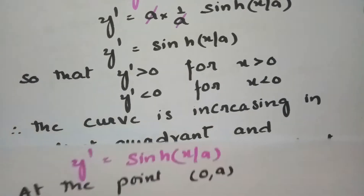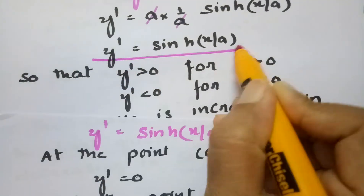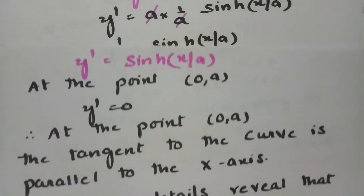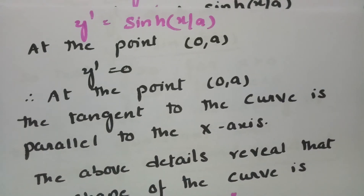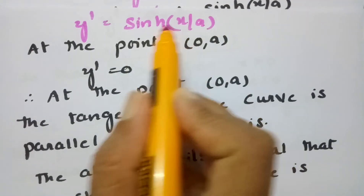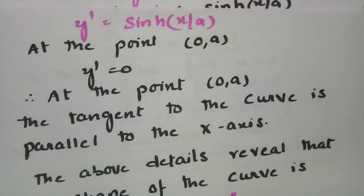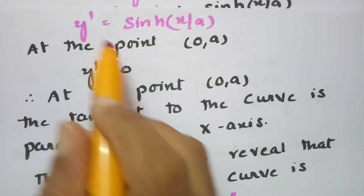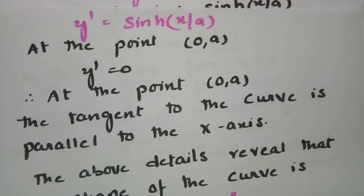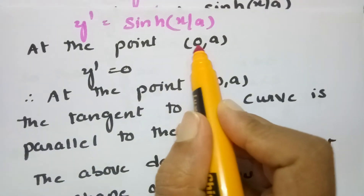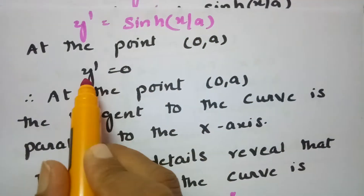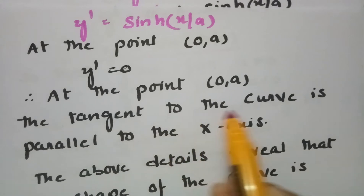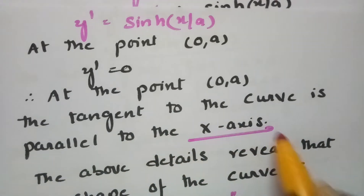We have y' = sinh(x/a). At the point (0, a), putting x = 0 gives y' = sinh(0) = 0. Since dy/dx = 0 means the tangent slope is zero, at the point (0, a) the tangent to the curve is parallel to the x-axis.